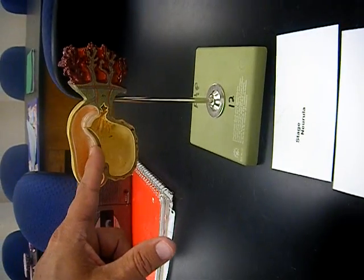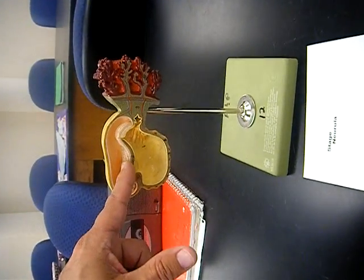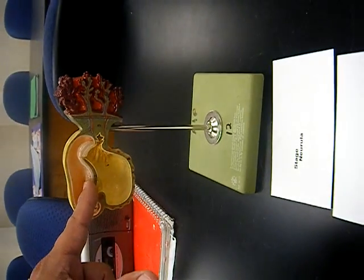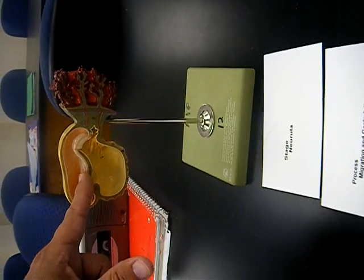I want the pink and the white, which is ectoderm, which becomes your nervous system and epidermis.